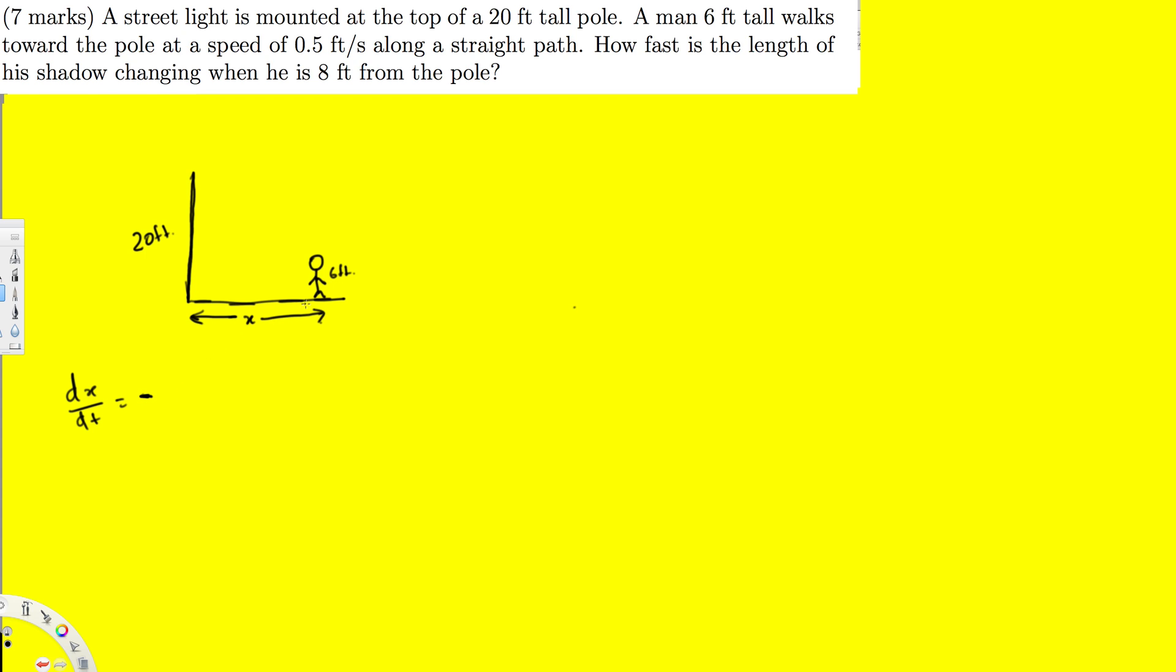We know that this is going to be negative because the distance is going to be decreasing. So whenever we have decreasing situation in related rates, we know that it is negative. So this is negative 0.5 feet per second. So they are asking how fast is the length of his shadow changing when he's eight feet from the pole. So this, so they are saying this is eight feet.